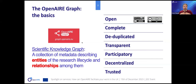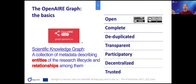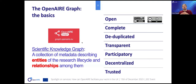It has to be complete, which means we're trying to collect from all sources pertinent to science — dealing with data and software in the same league as publications. We want it to be deduplicated because we collect descriptions of metadata records about the same objects from different data sources. We want it to be transparent, so we want to know where the data comes from, whether collected from a specific source or inferred through an algorithm.